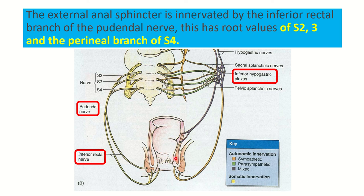On the other hand, the internal anal sphincter is supplied by a nerve arriving from the inferior hypogastric plexus. So the internal anal sphincter receives nerve supply derived from the inferior hypogastric plexus. To summarize: the external anal sphincter is innervated by the inferior rectal branch of the pudendal nerve, with a nerve root value of sacral 2, sacral 3, and sacral 4.